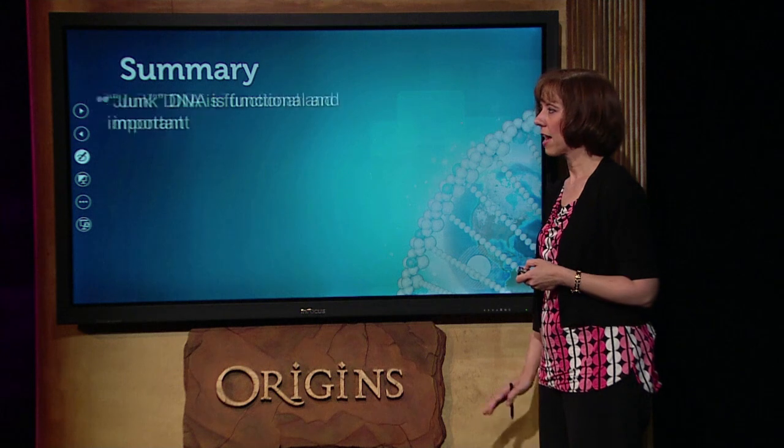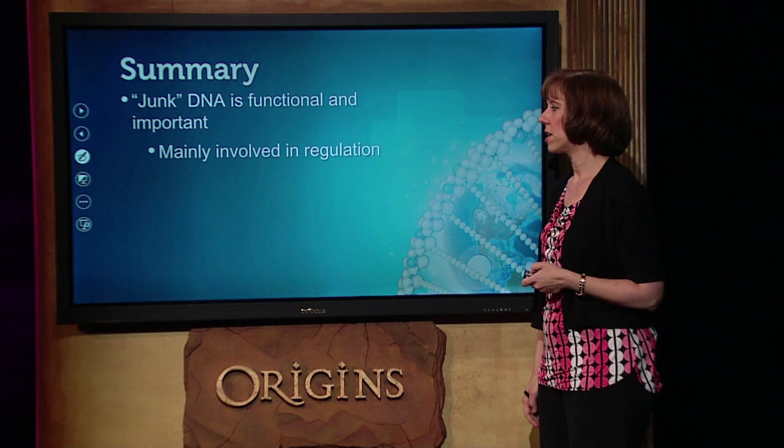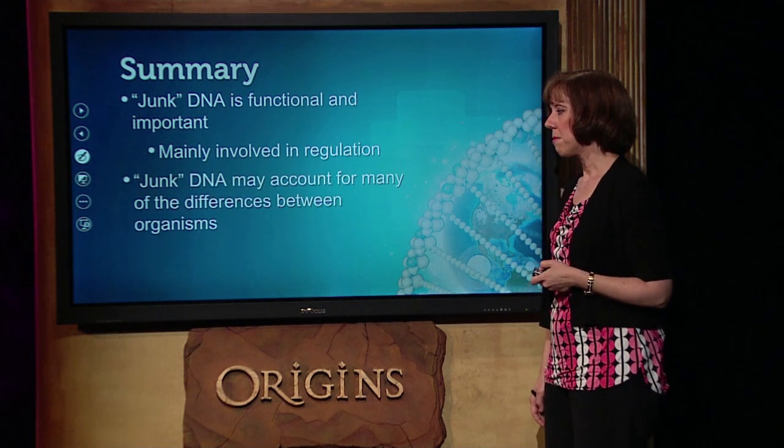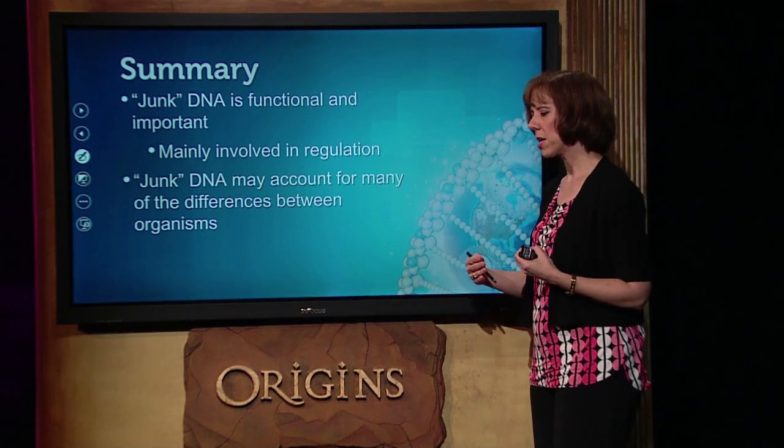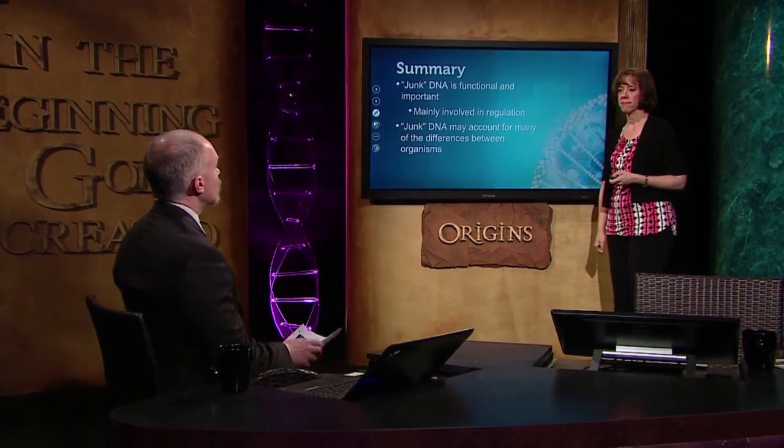So in summary, junk DNA is functional and important. A lot of it is involved in regulation, and it may account for a lot of the differences between organisms, because from a gene perspective different mammals' genes are probably similar since we all do similar things—but the regulation is probably very different between organisms, and that's where we'll find a lot of the differences. We need to take a break; come back with us as we continue looking at design in DNA.